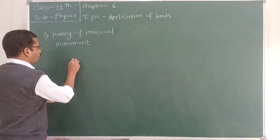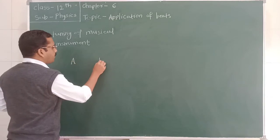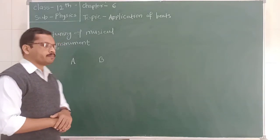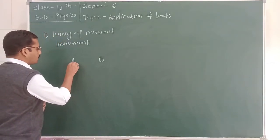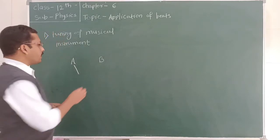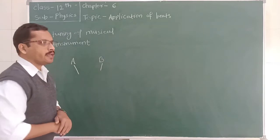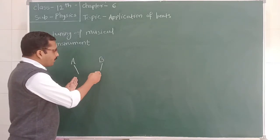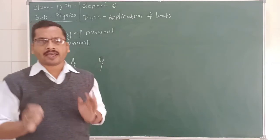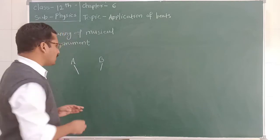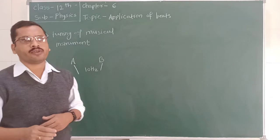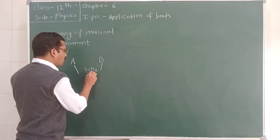For example, consider there are two musical instruments A and B and we need to match or tune these two musical instruments. First of all, the frequency of musical instrument A is determined and that of B is determined, and it is ensured that the difference between the frequencies of these two musical instruments is as less as possible. For example, if the difference is equal to 10 hertz, then there is a combination of beats, or we can say that the beat frequency is equal to 10.